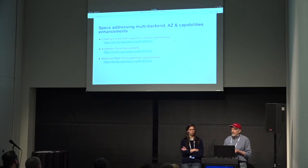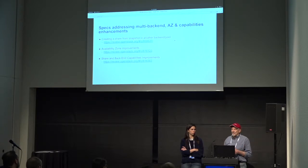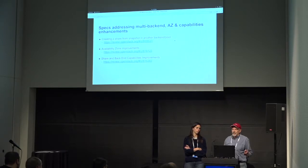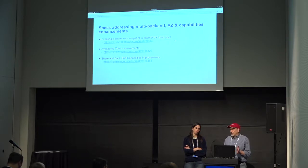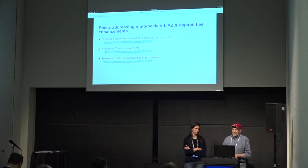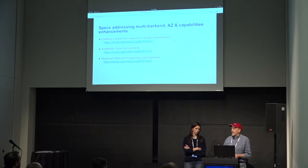There are improvements to the idea of availability zones. Availability zones are labels for places you put stuff, but generally represent a failure domain. There are specs to improve the way that when you schedule or place shares, you take availability zones into account. And there's a spec to expose different kinds of capabilities that we're currently not exposing to end users so they can select the right kind of shares.